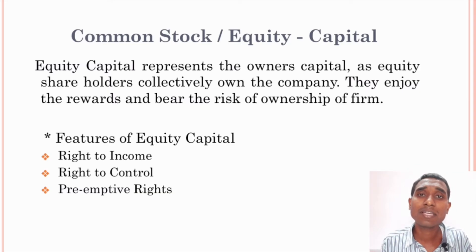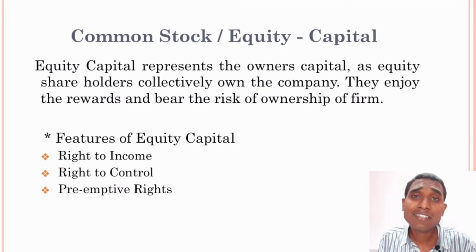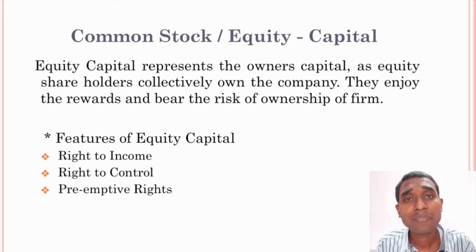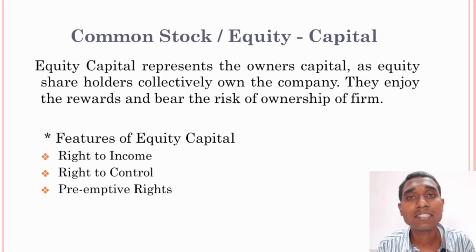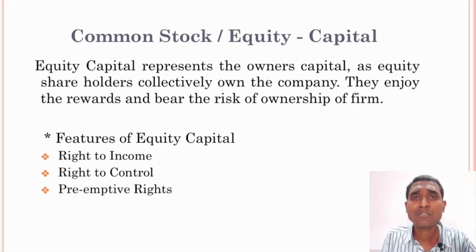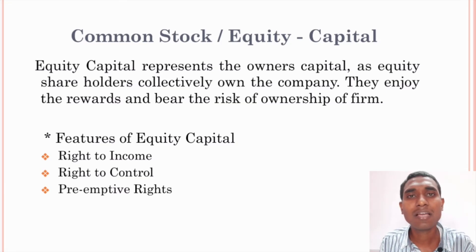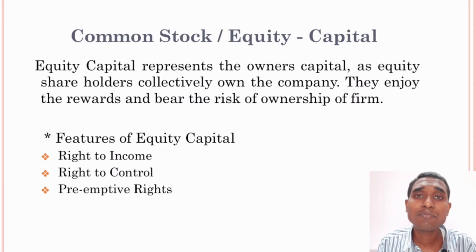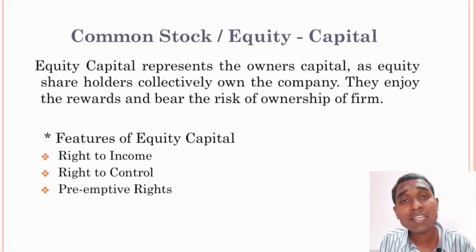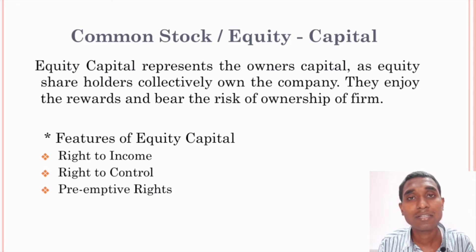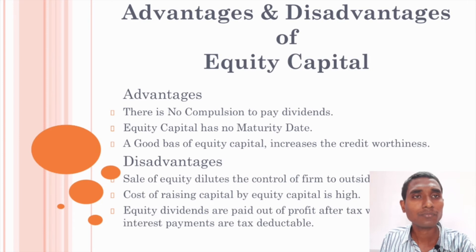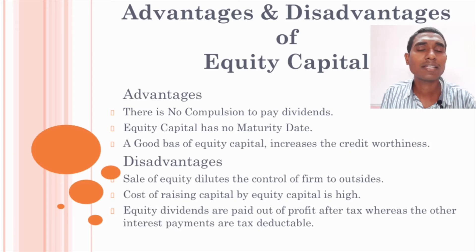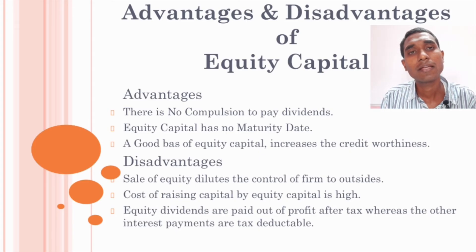The second feature is the right to control. As real owners of the company, equity shareholders have ultimate hold on the affairs of the company. They have voting rights, with which they appoint the board of directors, who in turn appoint the management. The management is responsible for managing the entire company, so equity shareholders have indirect control. The third feature is preemptive rights, which enable an equity shareholder to purchase additional shares issued by the company.